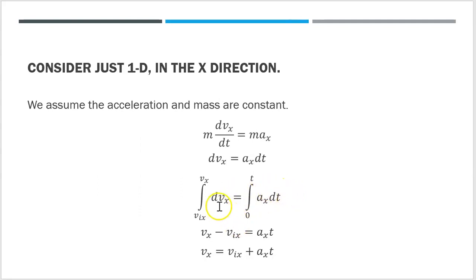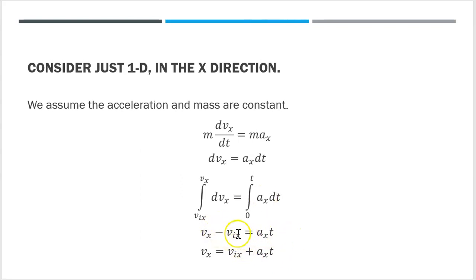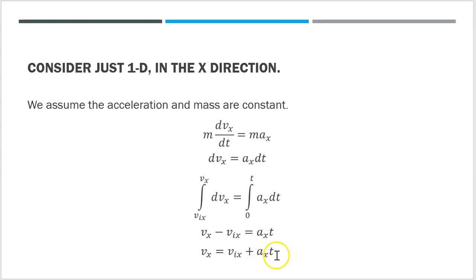When I integrate both sides, the left-hand side gives me vx evaluated from vix to vx, so I get vx minus vix. On the right-hand side, integrating dt gives t evaluated from 0 to t, which gives t minus 0, so ax times t. That gives me vx minus vix equals ax times t, which rearranges to: the velocity in the x direction at some later time t equals the initial velocity vix plus the acceleration times time, ax times t. This is essentially the definition of average acceleration rearranged — and it's one of our kinematics equations from 1000-level physics.